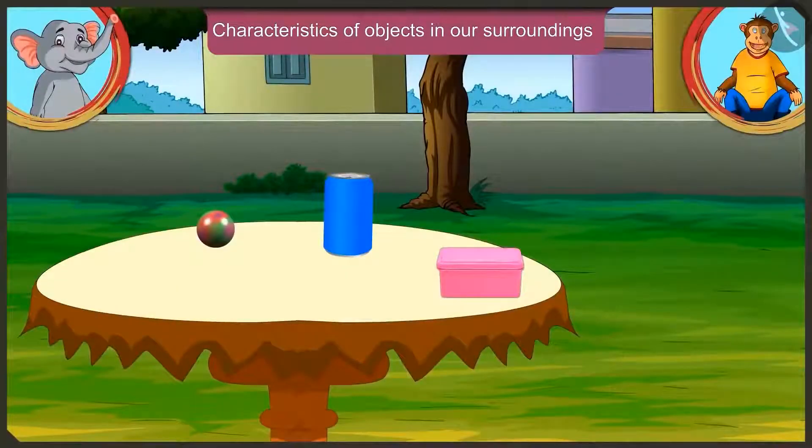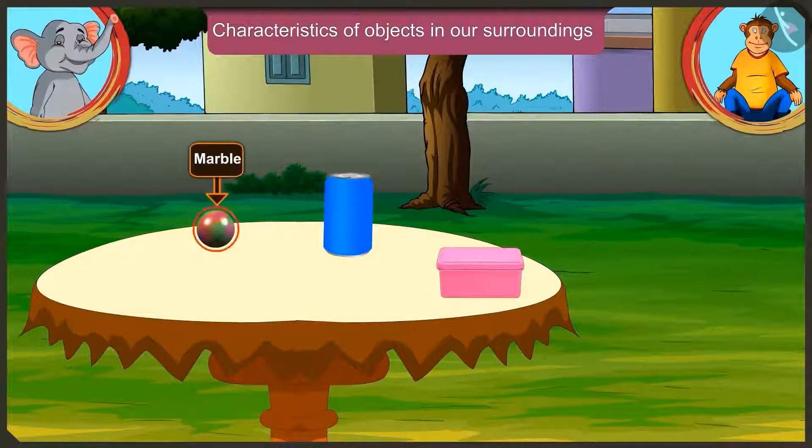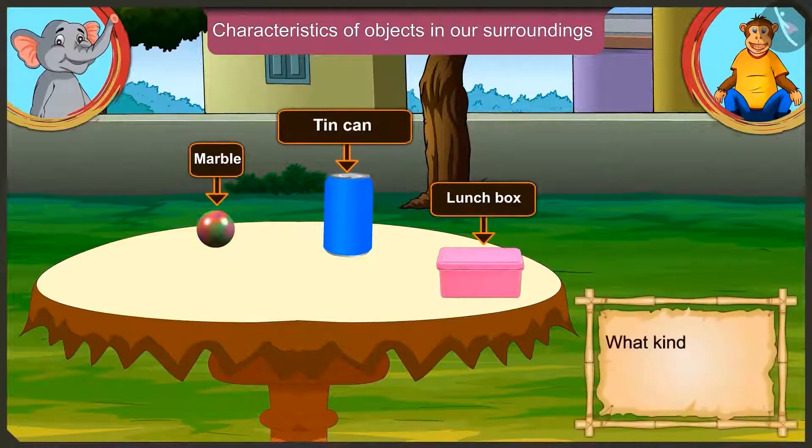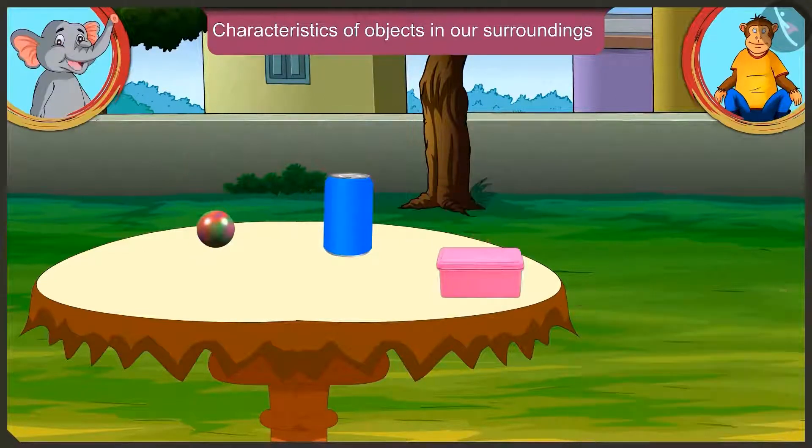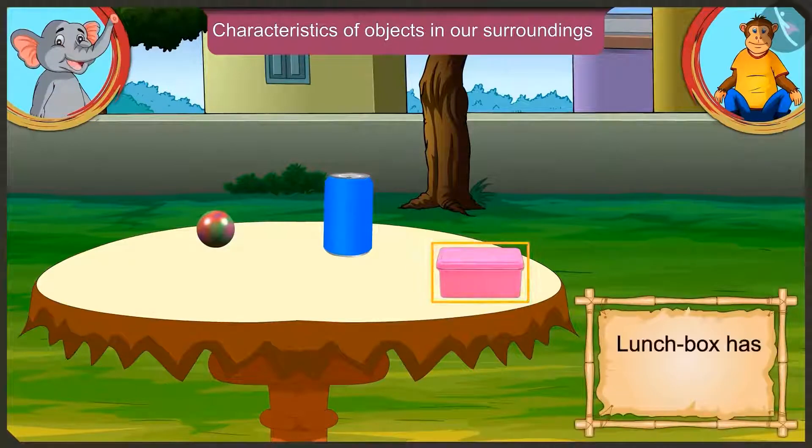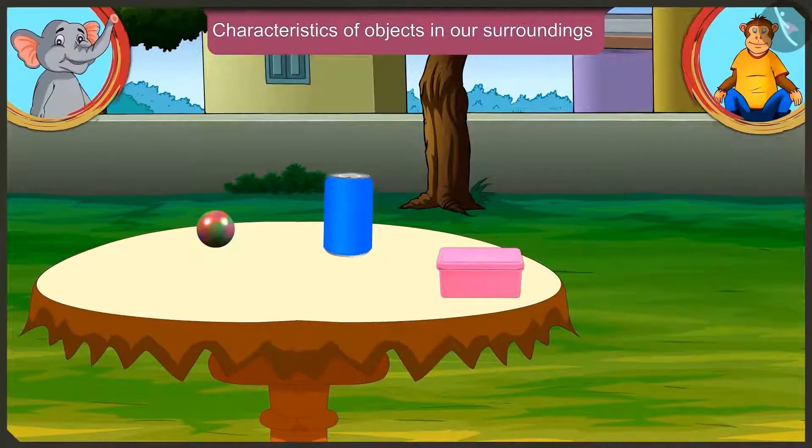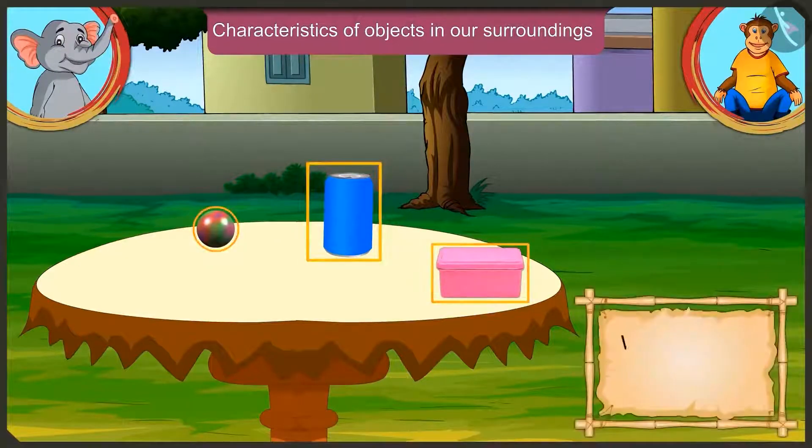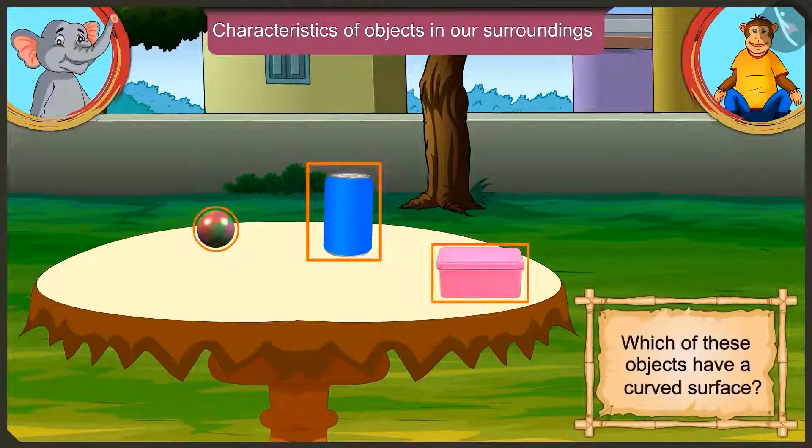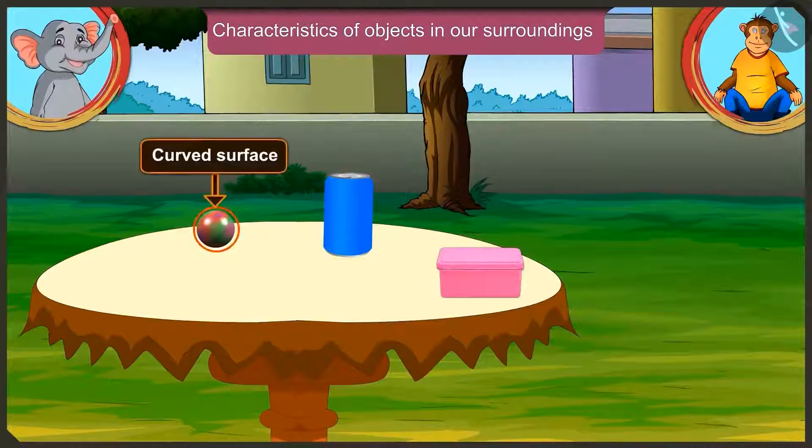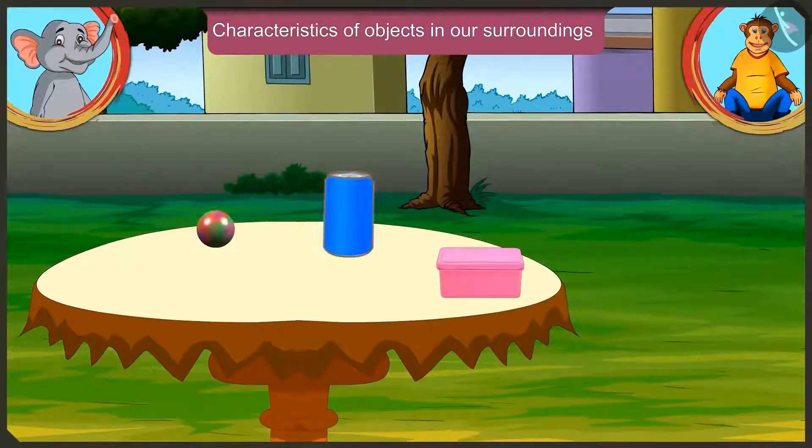Appu, look, few things are kept over here: a marble, a lunchbox and a tin can. Can you tell me what kind of surface does the lunchbox have? Yes, this lunchbox here has a flat surface which we can also move by putting it upright like this. Well done. Now can you tell me that amongst the objects that are kept here, which of them have a curved surface? Here, this marble has a curved surface.